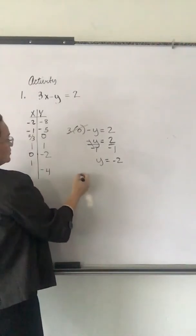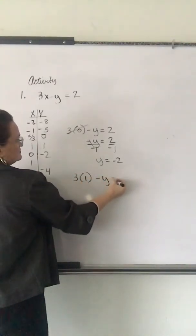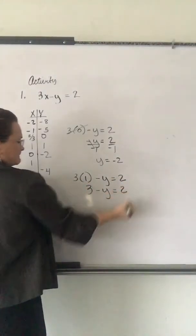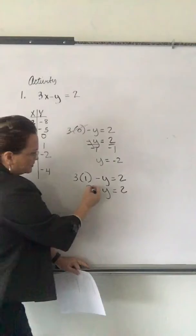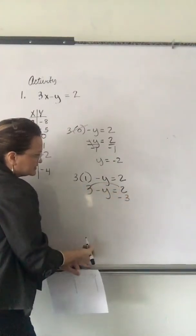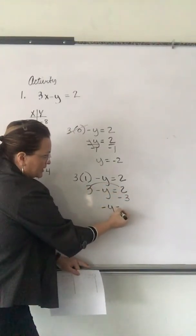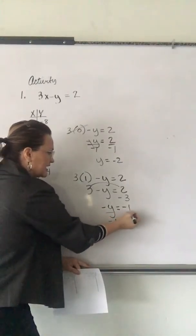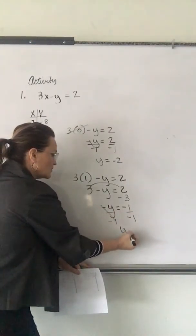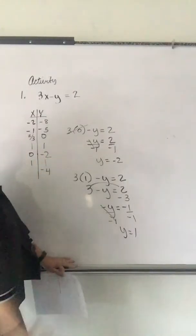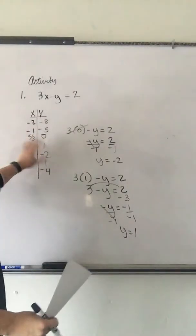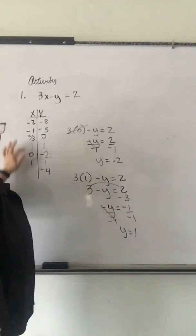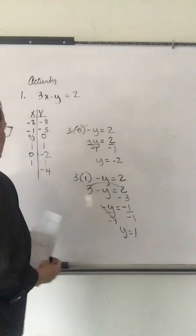Now, I'm plugging in 1 for X. 3 times 1 is 3. Throw the 3 across the line. Makes it minus 3. So, I have a negative Y on the left side and a negative 1 on the right side. I have to divide out the negative signs. Y is 1. Oh, we already did that, didn't we? But, we did it from the other perspective. Same solution, though. 1 and 1.